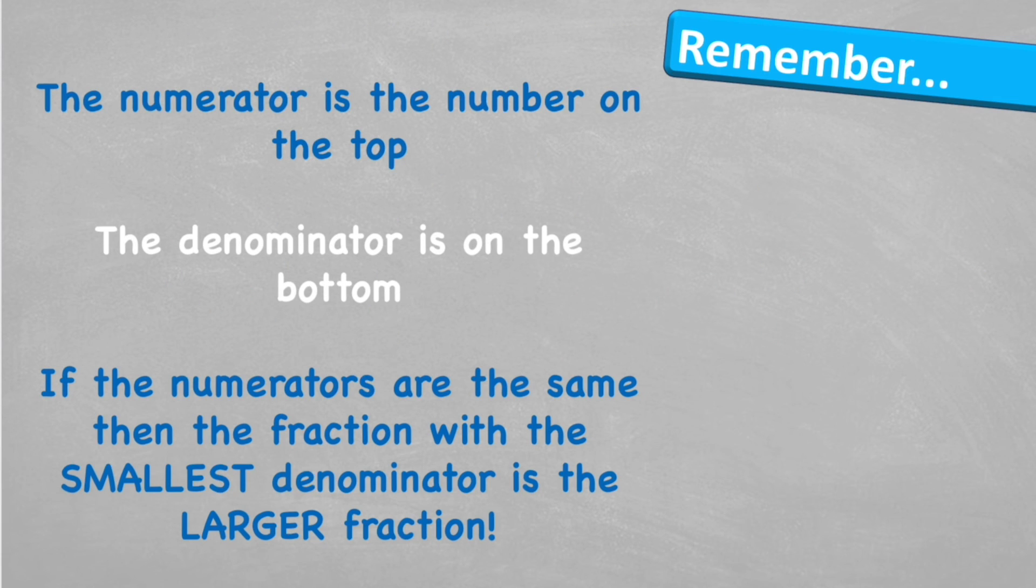That is how to order and compare fractions that have the same numerator. Let's look at what to remember. The numerator is the number on the top of a fraction, and the denominator is on the bottom. If the numerators are the same, then the fraction with the smallest denominator is actually the larger fraction, because it means we've had to split it into less pieces, so each piece will be bigger.